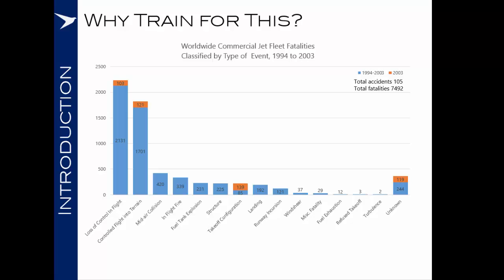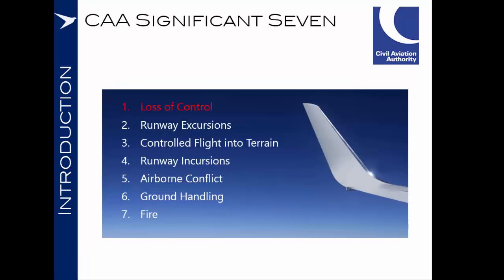Boeing statistics for the worldwide commercial jet fleet, covering fatalities classified by type of event between 1994 and 2003, show that loss of control in flight was the single biggest killer in aviation. It could also be said that a couple of the other issues covered — wind shear and turbulence — are topics covered in this course and could be considered part of the loss of control in flight statistics. Equally, some other factors such as certain structural issues or unknown causes are potentially linked to loss of control in flight.